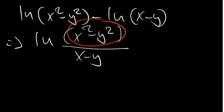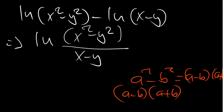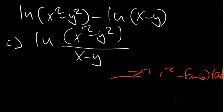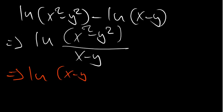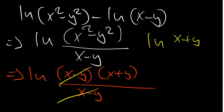Notice that x² − y² is a difference of two squares: (a² − b²) = (a − b)(a + b). Applying this, we get ln((x − y)(x + y) / (x − y)). We can cancel (x − y) from numerator and denominator, leaving the final answer: ln(x + y).